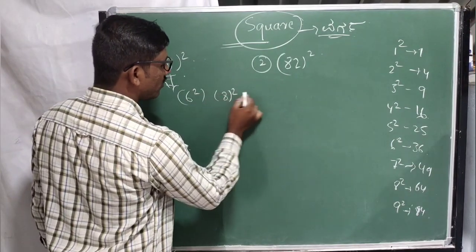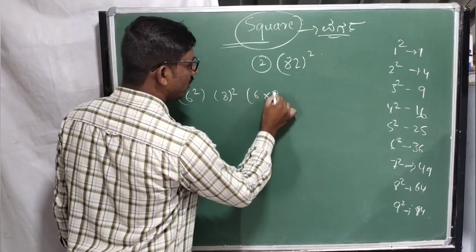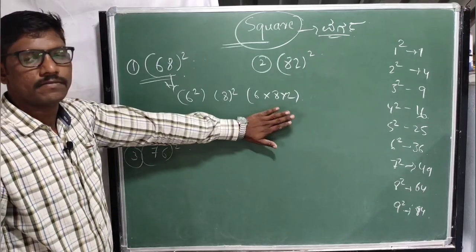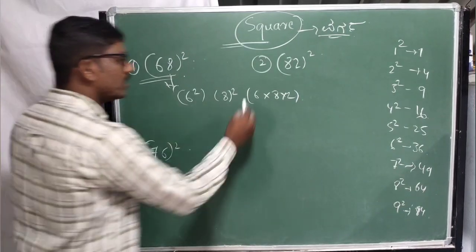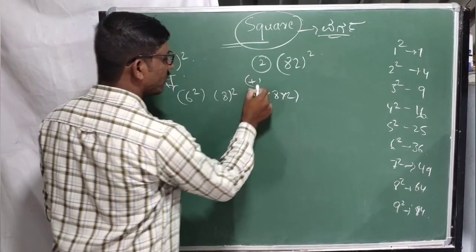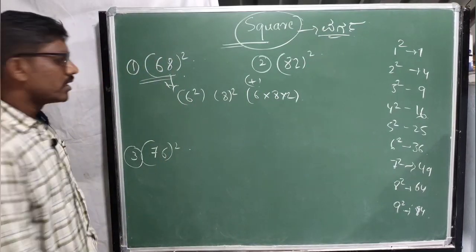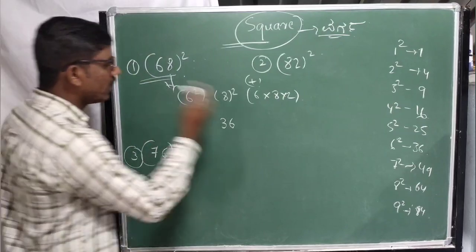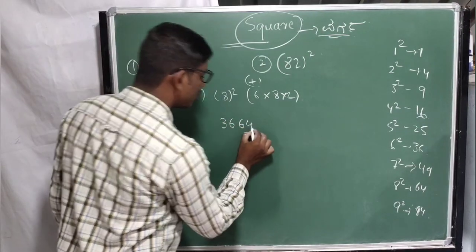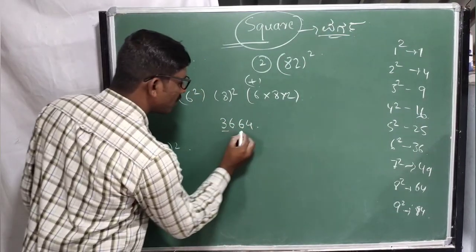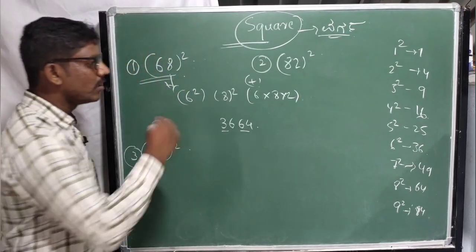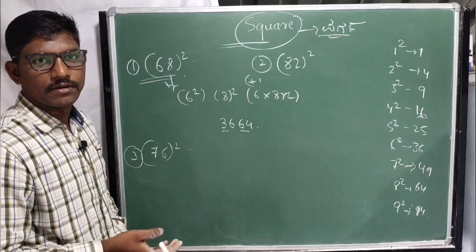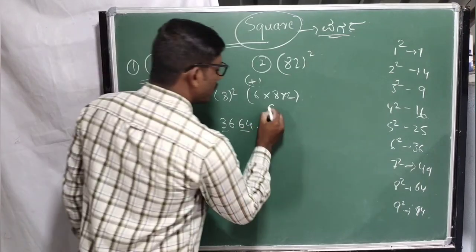8 squared. 6 into 8 into 2, r into 8 into 2. The first question is r squared, r squared. 36. Into 8: 64. 6 into 8: 4 into 48. Result: 9, 9.